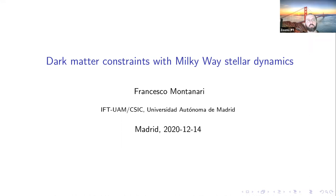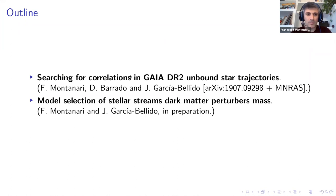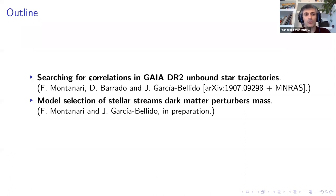Thank you all for coming to this Monday afternoon seminar. It's a great pleasure to have with us Francesco Montanari from the IFT. He will tell us about dark matter constraints with Milky Way stellar dynamics. This talk is based on two papers, both in collaboration with Juan, and the first paper also with David Barrado from Madrid. In the first part, he will show a method to look for trajectory intersections of stars with globular clusters or nearby galaxies, and in the second part, he will focus on stellar streams as a probe of dark matter.